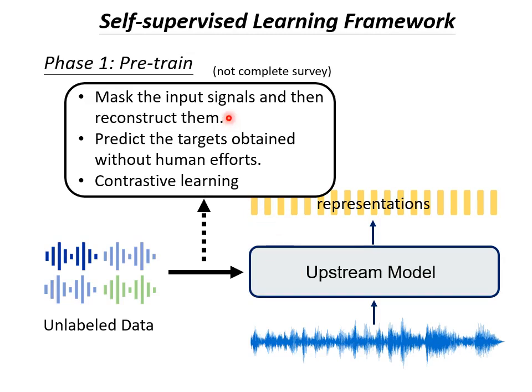For example, you can mask an audio segment and let the upstream model recover the masked audio segment during training. This is similar to what we do in NLP — BERT uses this kind of training method. Another way is contrastive learning. SIM-CLR on image is called contrastive learning, and it can also be done in the voice domain in many different ways.